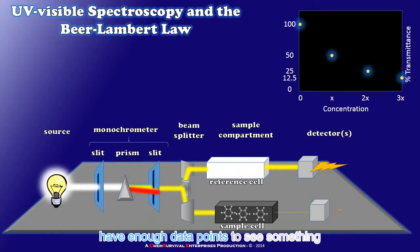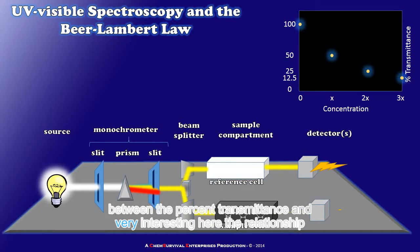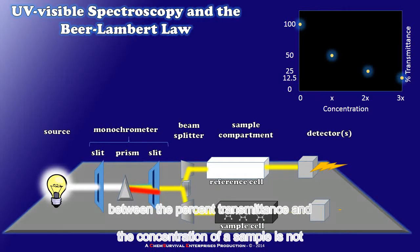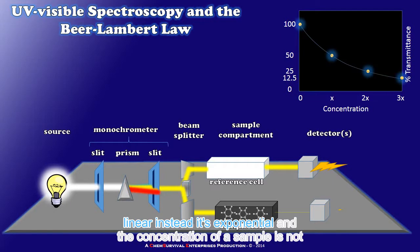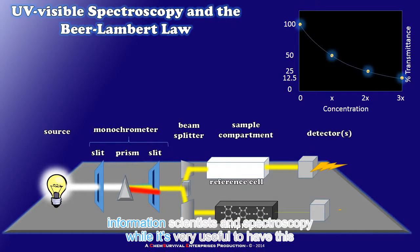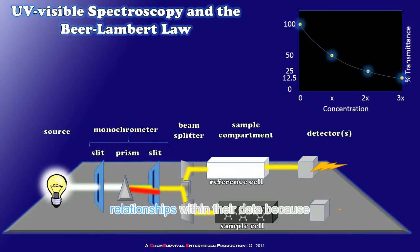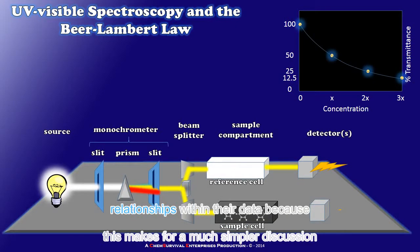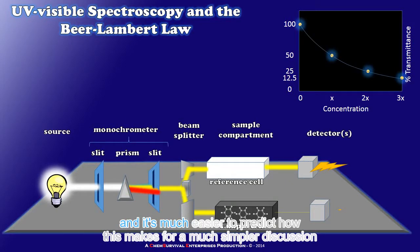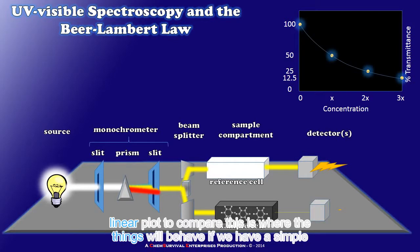Now we have enough data points to see something very interesting here. The relationship between the percent transmittance and the concentration of a sample is not linear. Instead it's exponential. And while it's very useful to have this information scientists and spectroscopists prefer if they can to discuss linear relationships within their data because this makes for a much simpler discussion and it's much easier to predict how things will behave if we have a simple linear plot to compare.